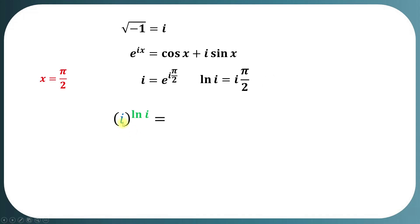To calculate the value of iota to the natural log of iota, we will replace iota by e to the iota times pi by 2, and natural log of iota by iota times pi by 2.